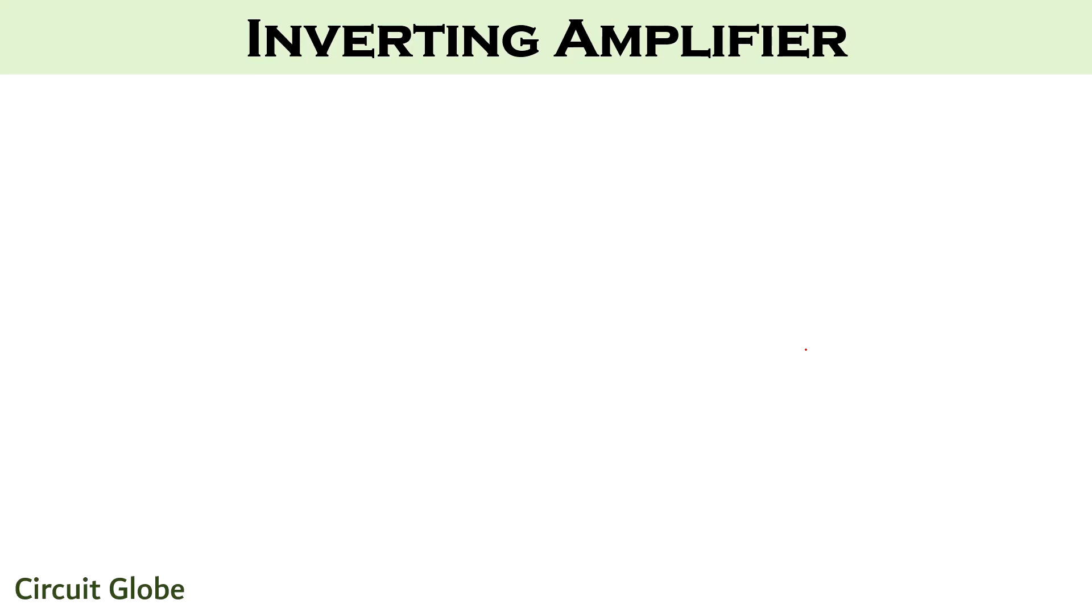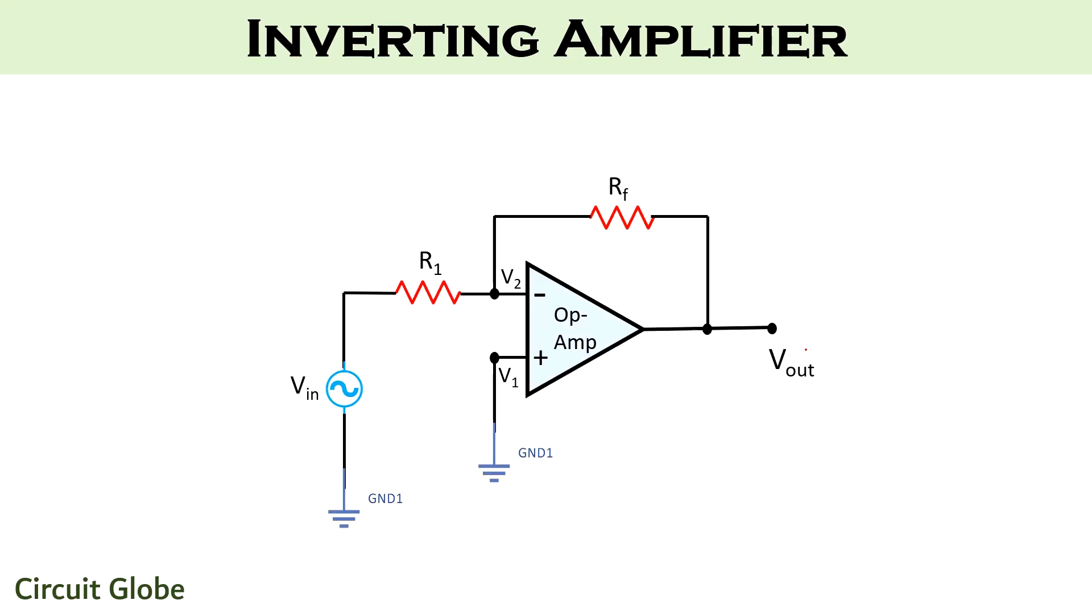Let us now proceed to check the circuit representation of inverting operational amplifier. Here it is clearly shown that the input Vin is provided to the inverting input terminal of the op-amp that is the negative terminal. Hence, it is called so. Along with that, the feedback of the circuit is also provided to the inverting input terminal.